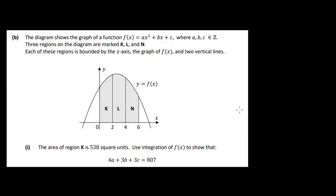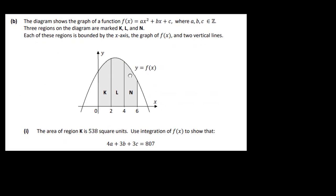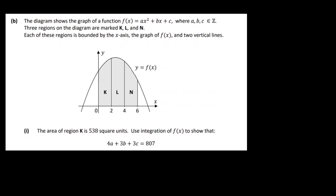In part B we have a diagram showing the graph of function ax squared plus bx plus c, where a, b and c are integers. Three regions on the diagram are marked k, l and n. Each region is bounded by the x-axis, the graph of f of x, and two vertical lines. The area of region k is 538 square units. We need to use integration to show that a certain expression is equal to 807. If we integrate between 0 and 2, we should end up with that equation.